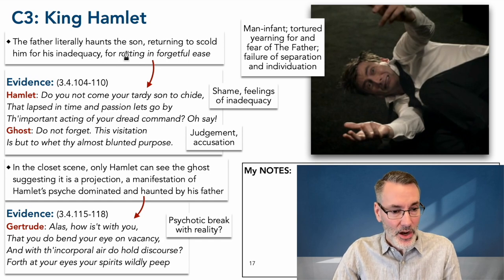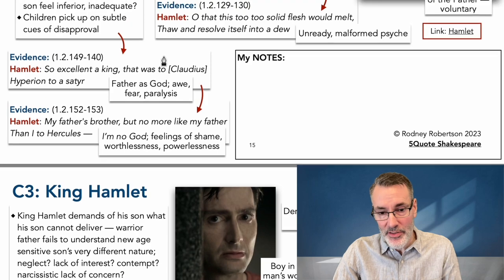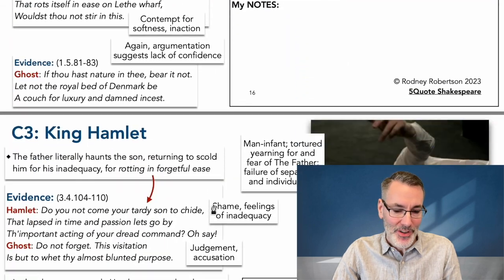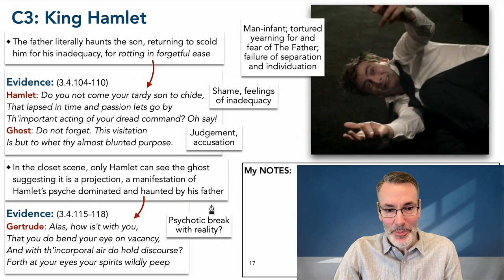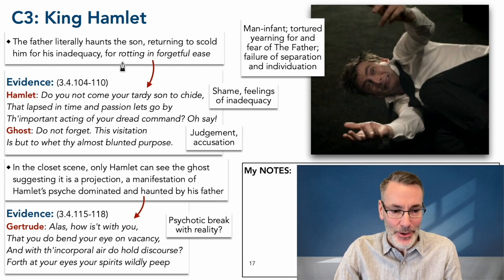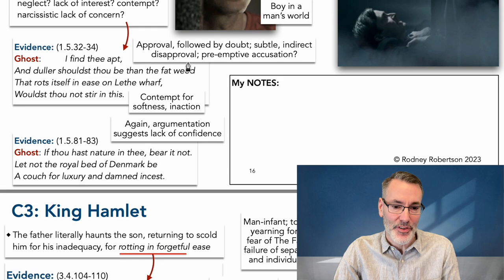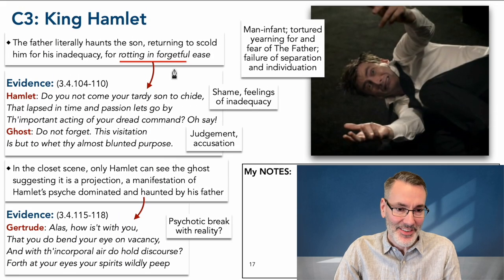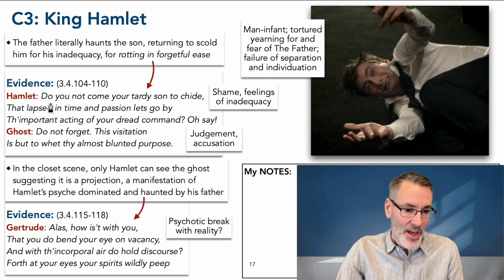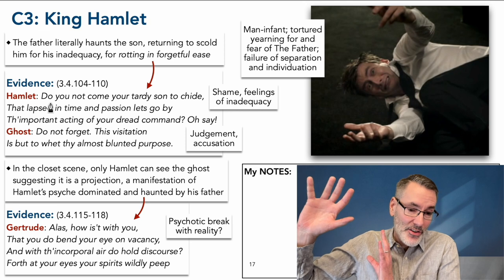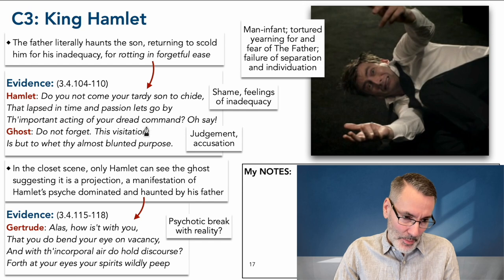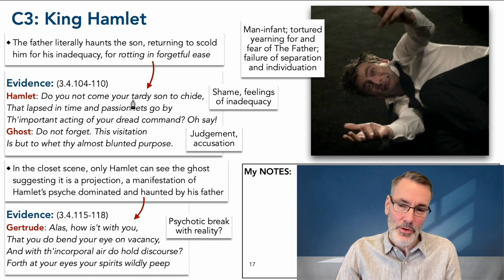The father literally haunts the son. He's not Dumbledore — he doesn't willingly remove himself out of the way so that the young person can become themselves. He comes back from the grave to get in the young person's way. He literally haunts his son, returning to scold him for inadequacy and for 'rotting in forgetful ease on the banks of the river of forgetfulness.' Hamlet says in Act 3, Scene 4: 'Do not come back your tardy son to chide — that lapsed in time and passion lets go by the important acting of your dread commands.' Please don't accuse me of being late.